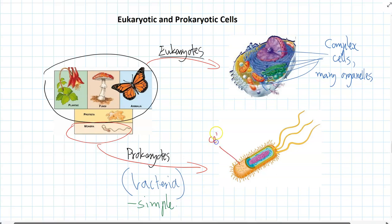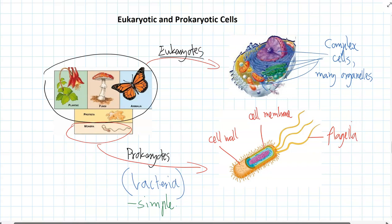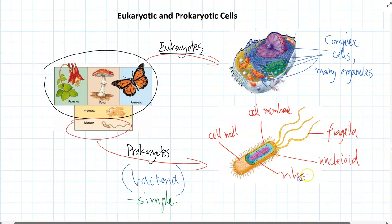What prokaryotes do have is a cell wall, they still have a cell membrane, and they can still have flagella to help them move around. They don't have a nucleus, so the DNA just floats around in the middle of the cell — we call it a nucleoid. It's just an area, not really an organelle. They still need to make proteins, so they still have ribosomes. They can have cilia as well. Really, there are only five or six organelles in a prokaryote — really simple cells compared to eukaryotes, which are super complex.